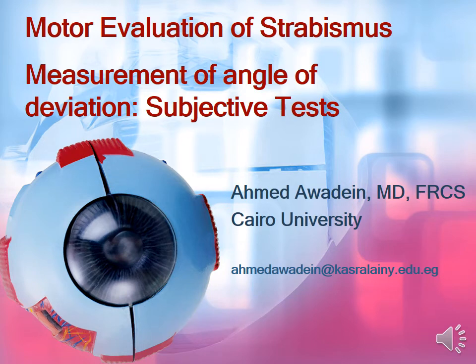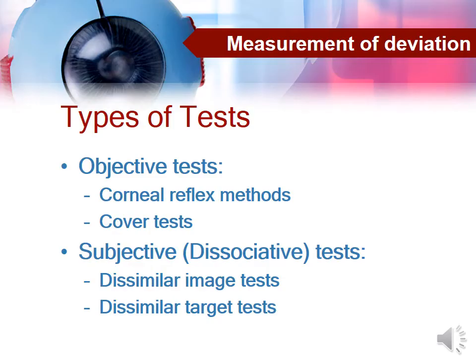Hello, we are going to continue what we started about the measurement of the angle of strabismus. As we mentioned in the previous presentation, the tests used to measure the angle of deviation include the objective tests such as the corneal reflex methods, the cover tests, and the subjective or dissociative tests. In this presentation, we are going to discuss the subjective tests, which include the dissimilar image tests and the dissimilar target tests.